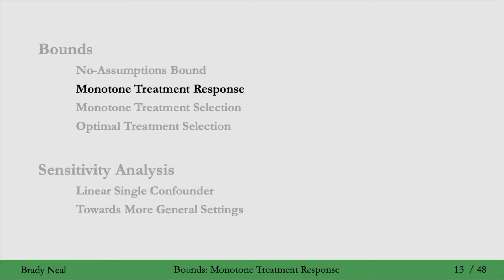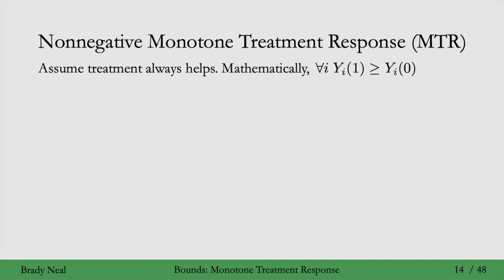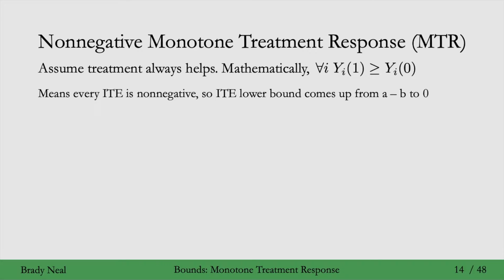We'll now move on to the first assumption that we can use to make the no-assumptions bound smaller: the monotone treatment response assumption. The idea with this assumption is to assume that treatment always helps, and this means that every individual treatment effect is non-negative.